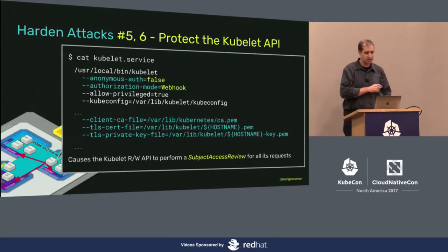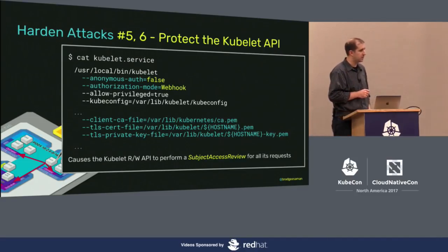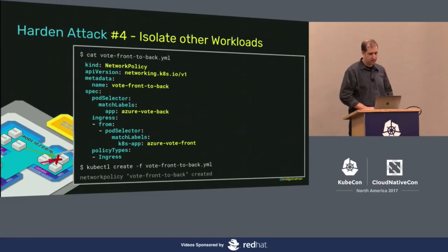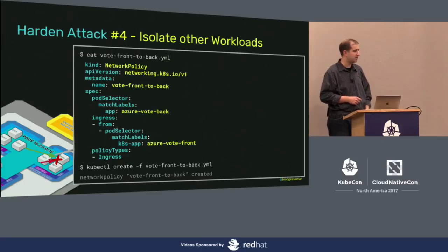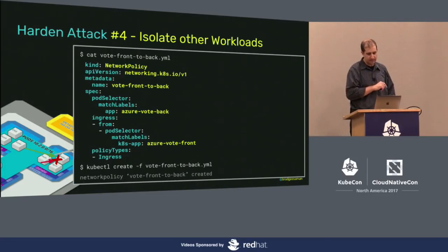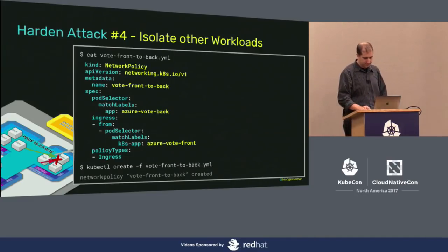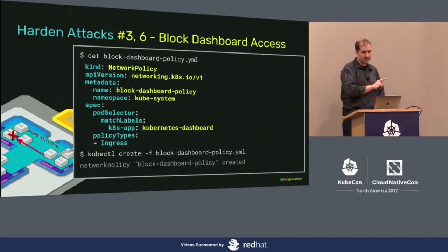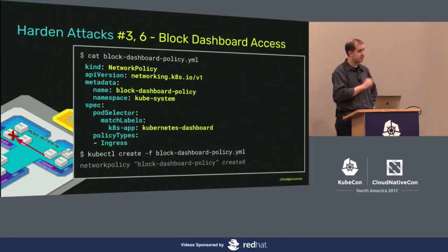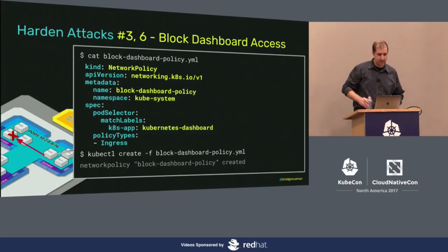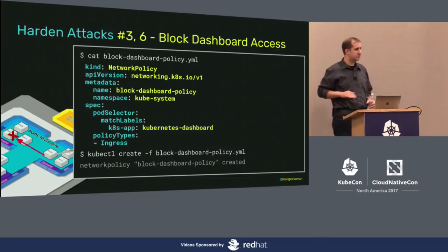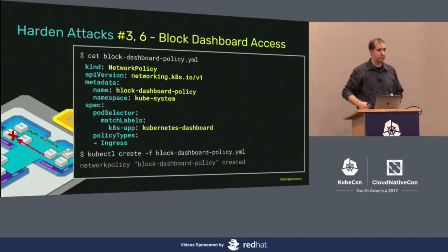Protect the kubelet: look for authorization mode webhook — if you don't see that, your kubelet is probably allowing that kubelet exploit. Isolating workloads: a very simple network policy stops the Redis hack in its tracks. You say every pod with the label azure-vote-back only gets ingress from azure-vote-front. For the dashboard — if you're running it and have network policy ingress support — this is almost a 99% perfect drop-in. It selects only the Kubernetes dashboard pod but has no rules, which by default means default deny. This does not block `kubectl proxy` which works through the API server; it blocks access from pods that have no business talking to the dashboard.